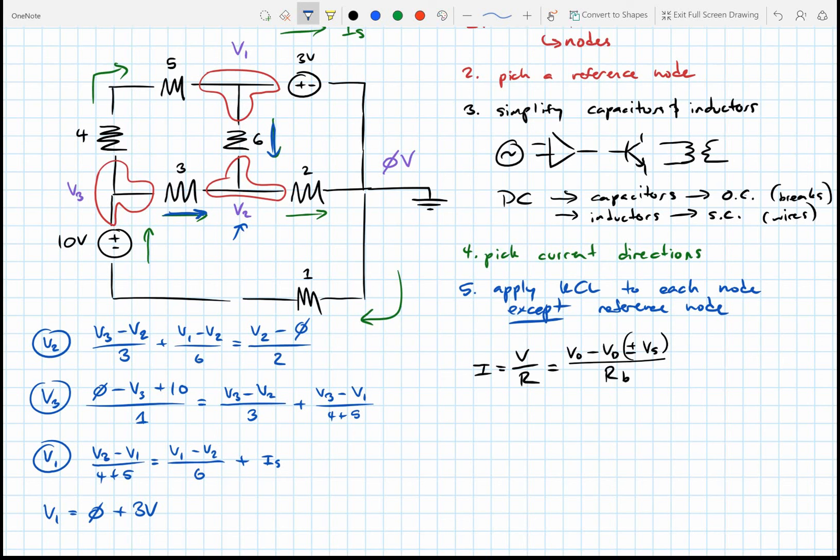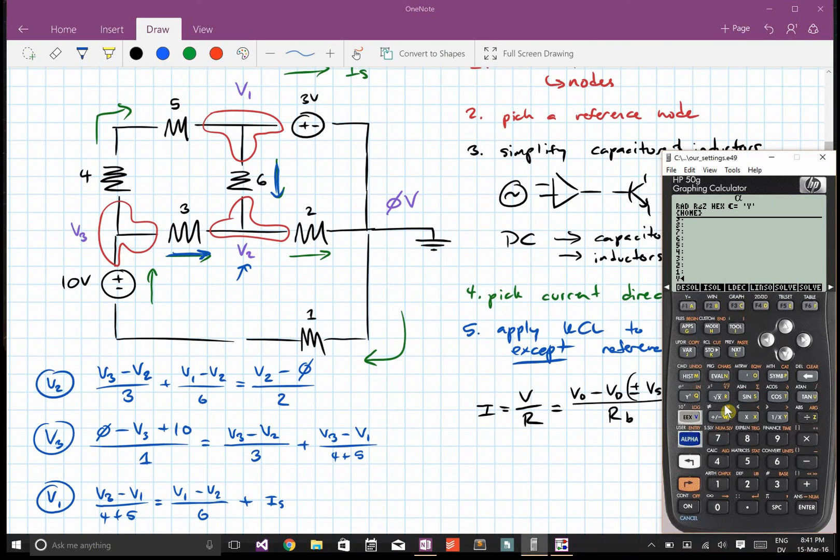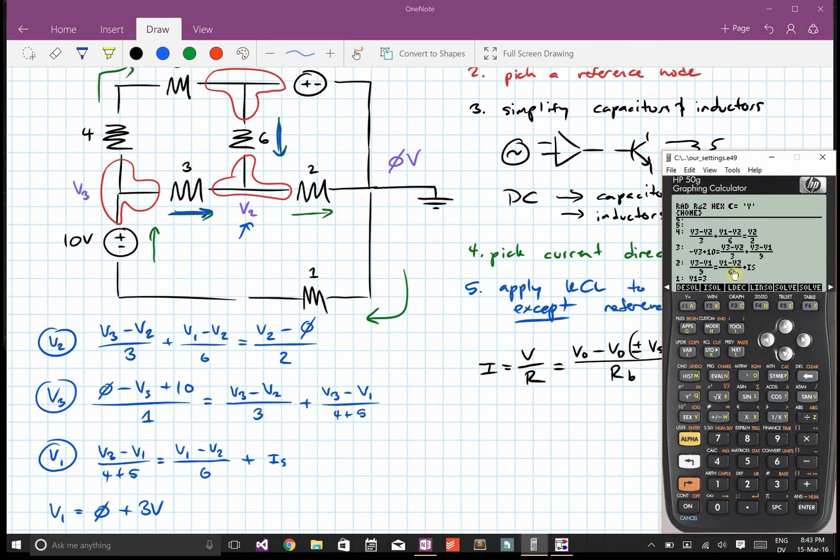And I'm going to solve that using my handy dandy HP50G. So we have V3 minus V2 all over three plus V1 minus V2 all over six, and those equal V2 minus zero over two. Equation one. Four equations, four unknowns. So let's put this into an array. And we'll put our unknowns into an array. V1, V2, V3, IS. And we're going to go symbolic solve, linear solve. There you go.